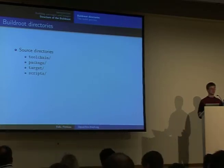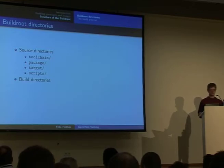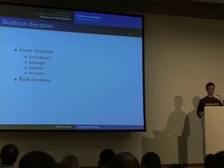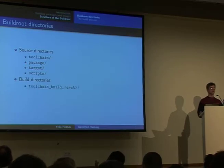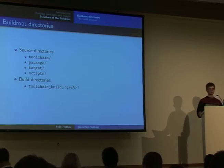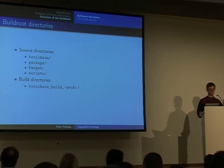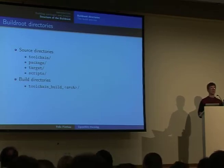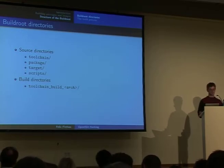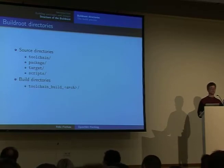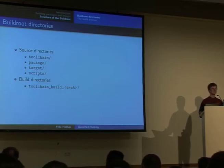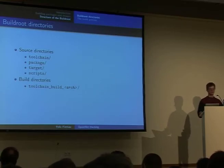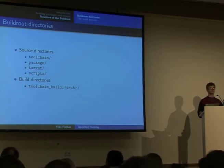The target directory contains all the build instructions for both the firmware image generating process and the kernel building process itself. Another additional directory is the scripts directory, where you can put some extra scripts that you may need for several packages at once — you will find the Perl script in there that does the download and some other ipkg-related stuff. There are also some important directories for the actual build process which are generated at runtime, for example the toolchain build directory.